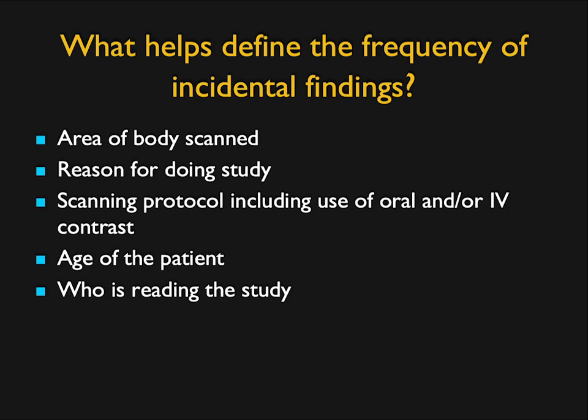What helps define the frequency of incidental findings? The area of the body scanned — more areas means more potential abnormalities. The reason for the study. The protocol used — non-contrast may reveal fewer findings than good IV contrast. The age of the patient — the older the patient, the more incidental findings. And who is reading the study — some readers cannot call a study normal, appending hedges like 'probably normal, can't rule out mass' or 'probably adenoma, can't rule out neoplasm' to every finding.